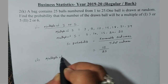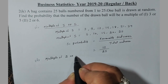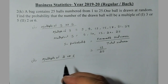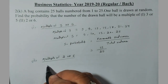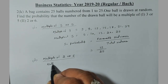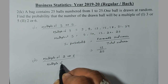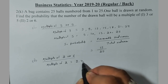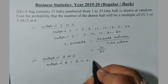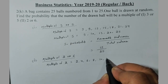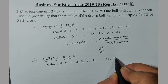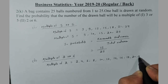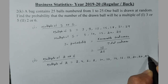Now for part 2: multiple of 2 or 6. So here we have multiples of 2 from 1 to 25. The multiples of 2 are: 2, 4, 6, 8, 10, 12, 14, 16, 18, 20, 22, and 24.